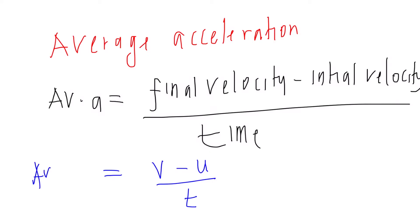Minus the initial velocity, divided by the time taken. The formula is: average acceleration equals final velocity (V) minus initial velocity (U), divided by time (T). We use this to calculate average acceleration.